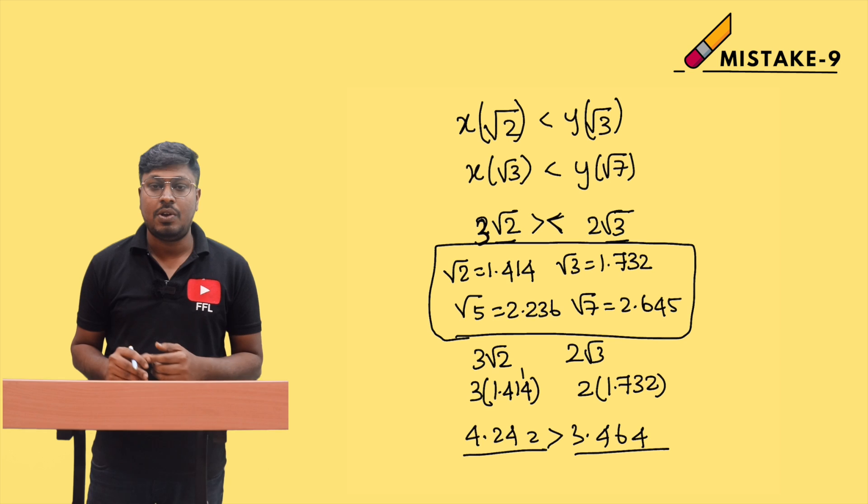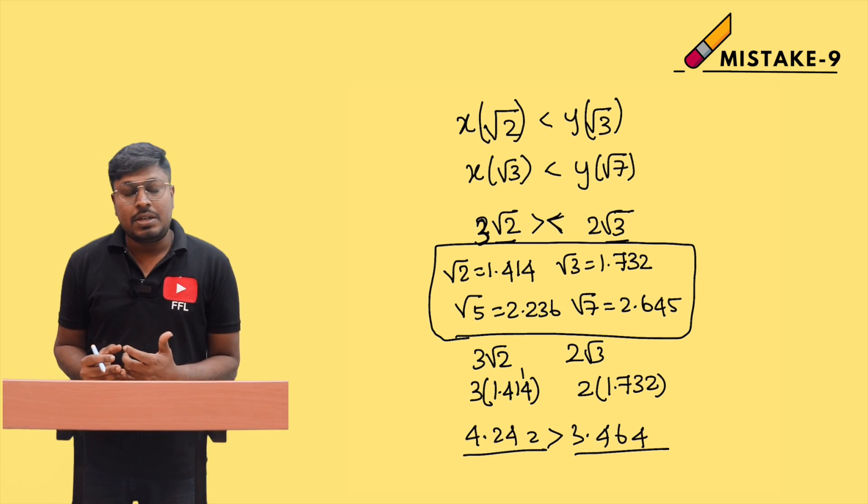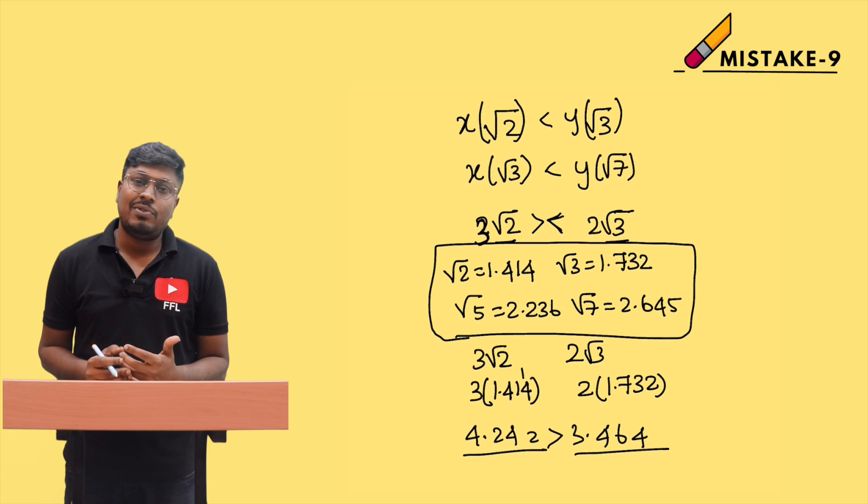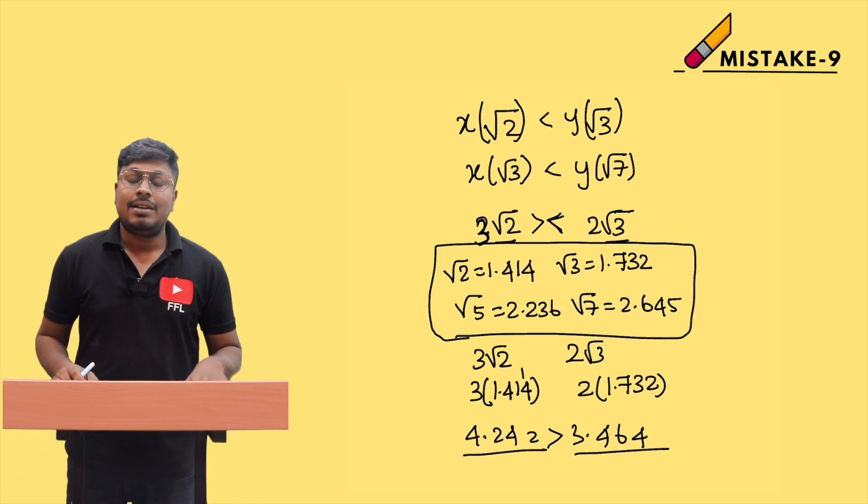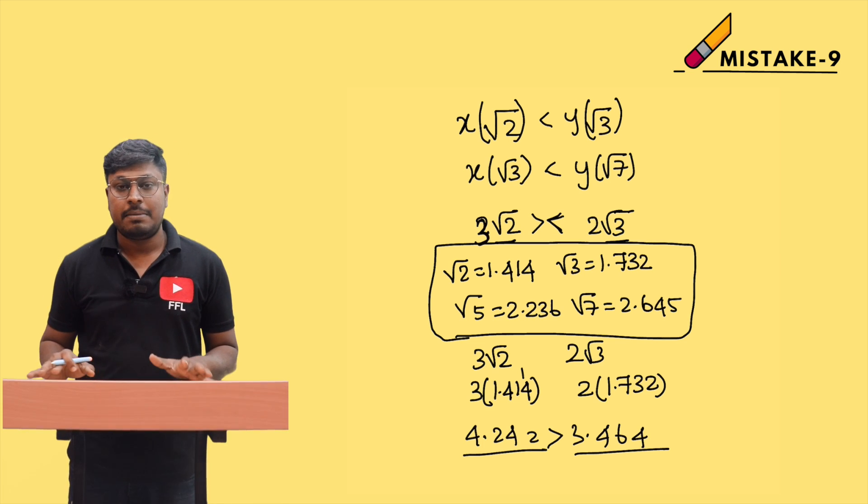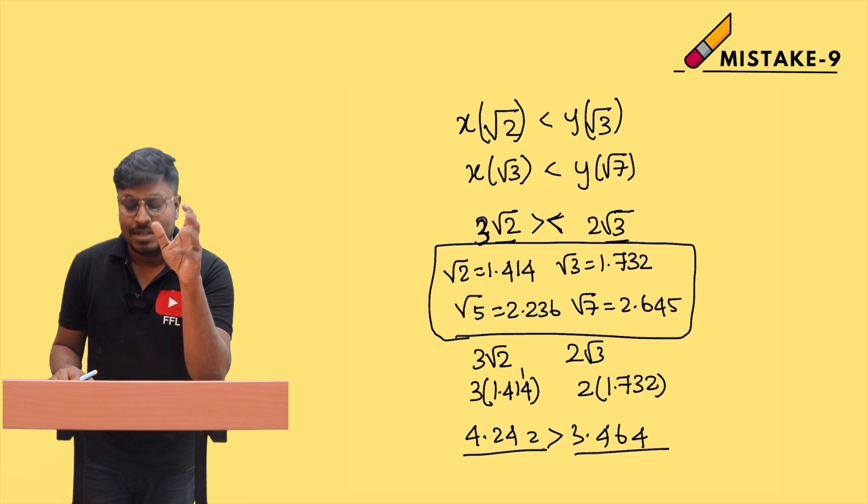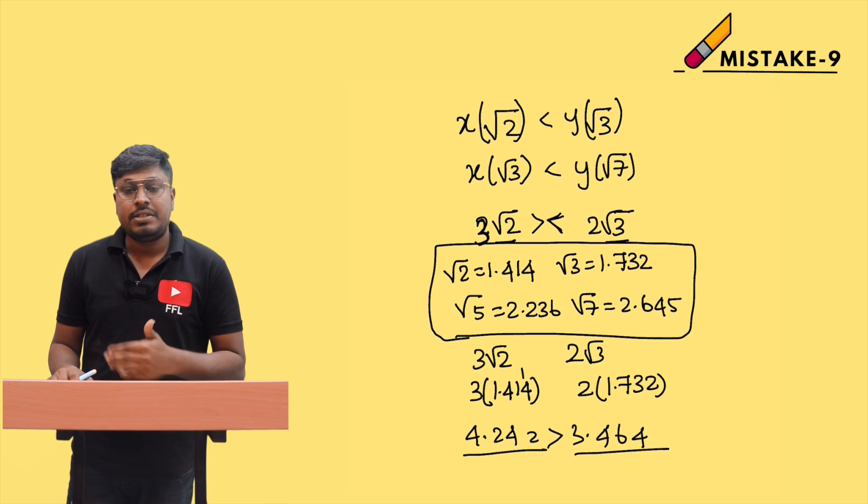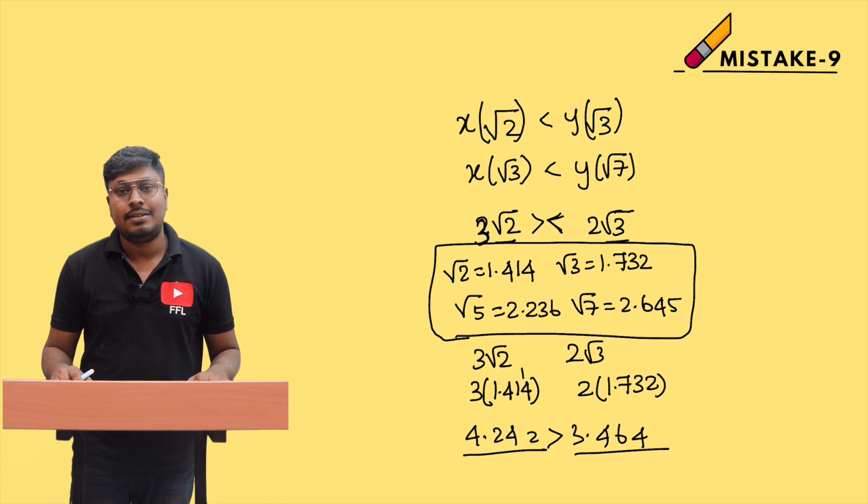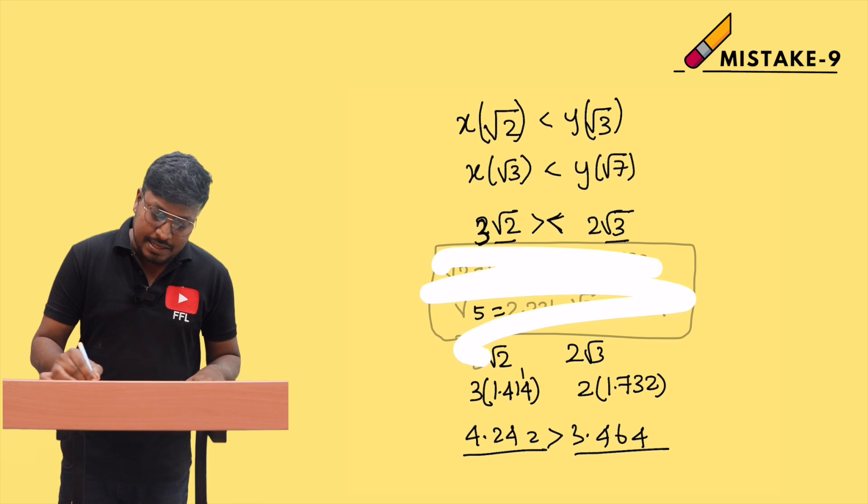Don't say which is greater just by looking at the root numbers like √7, √5, √3. When it comes to multiplication based on root while comparing, try to convert the root value into an answer. Instead of √7, write it as 2.645 and try to solve.